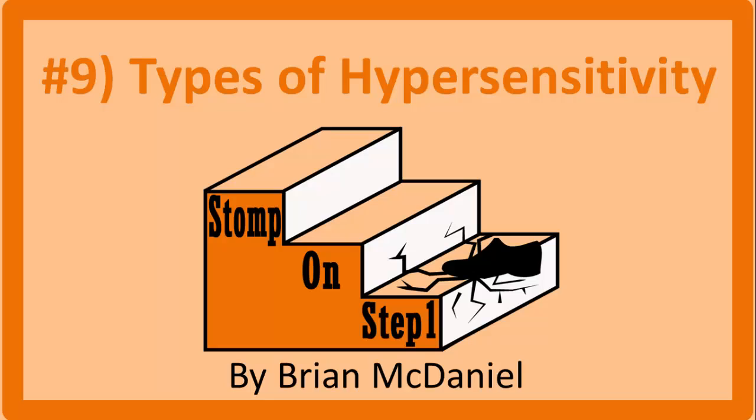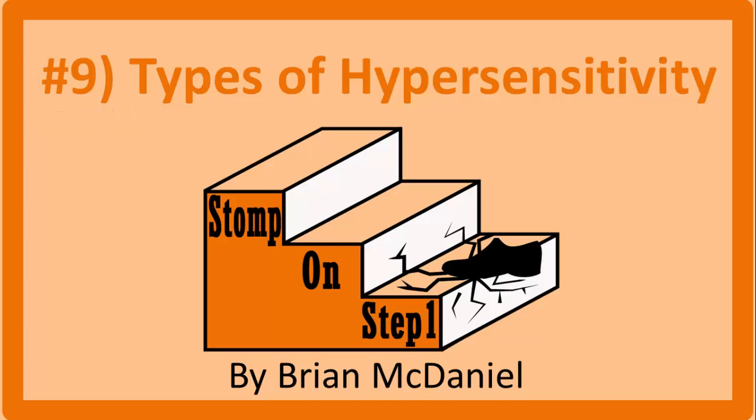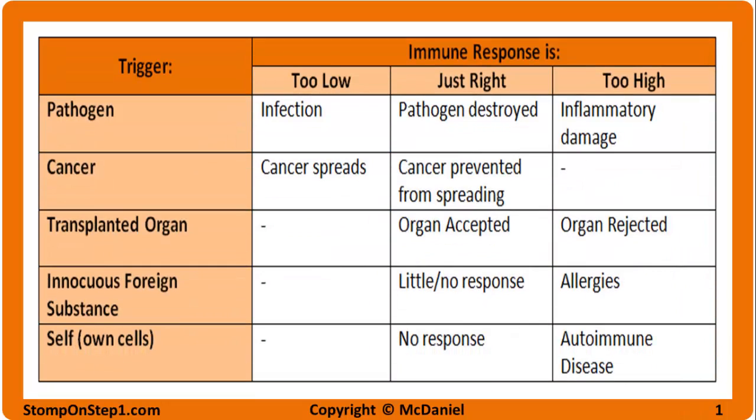This is the ninth video in the inflammation and immunology section, and it is going to cover the different types of hypersensitivity — type 1, 2, 3, and 4. As is the case with most of this section, we're primarily talking about when the immune system is either too strong or too weak.